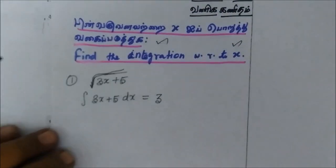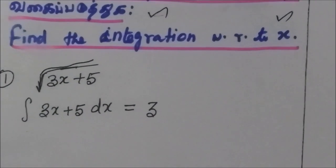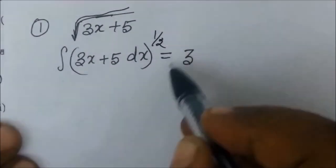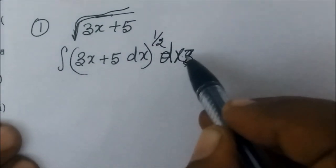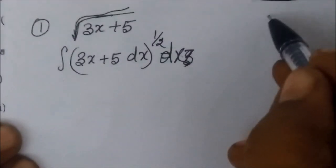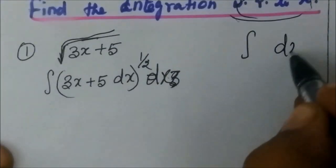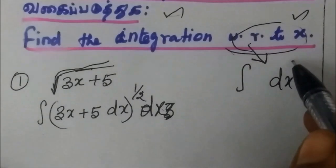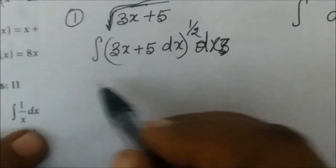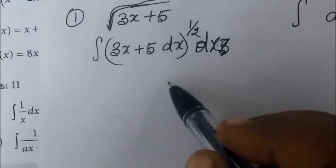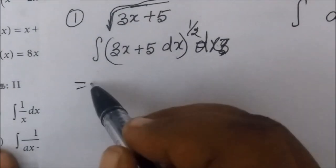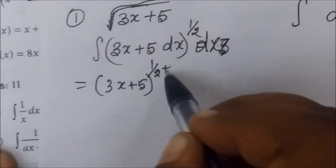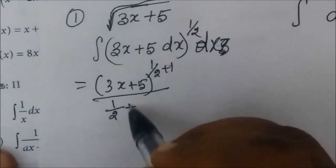Root of 3x plus 5. What do we do with root? The power is half. So we will write it as (3x + 5) to the power half, dx. This is the integral, equal to the formula: (3x + 5) to the power half plus 1, divided by half plus 1.